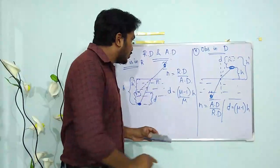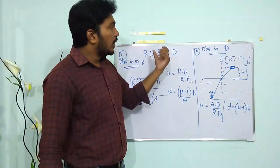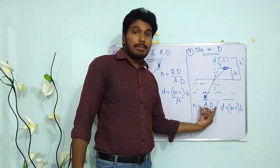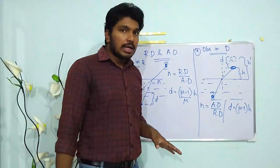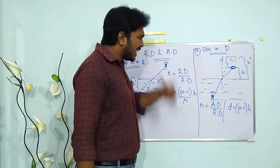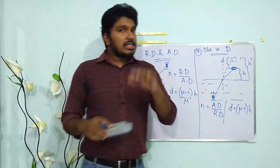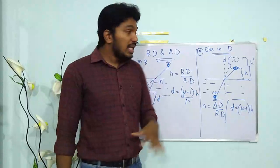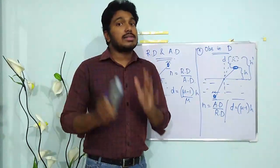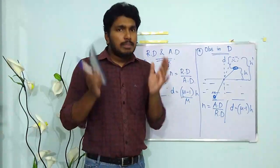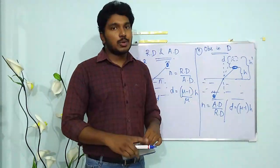To summarize: when the observer is in the rarer medium, n = real depth / apparent depth; when the observer is in the denser medium, n = apparent depth / real depth. These two conditions are very important for your exam. The next video will cover the glass slab. If you have any doubts, please comment below, give a thumbs up, and subscribe to Basics Physics Classroom.